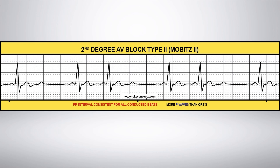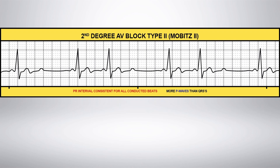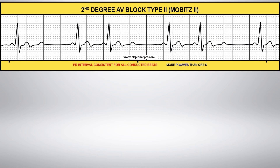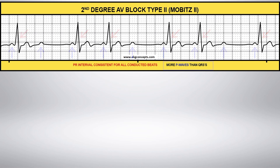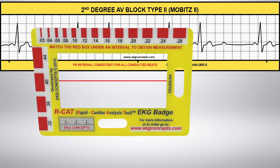In second-degree AV block, the P-wave is consistent for all conducted beats, but notice that there are more P-waves than QRS complexes. The difference between second-degree type 1 and second-degree type 2 is that the P-R interval is consistent for all conducted beats.